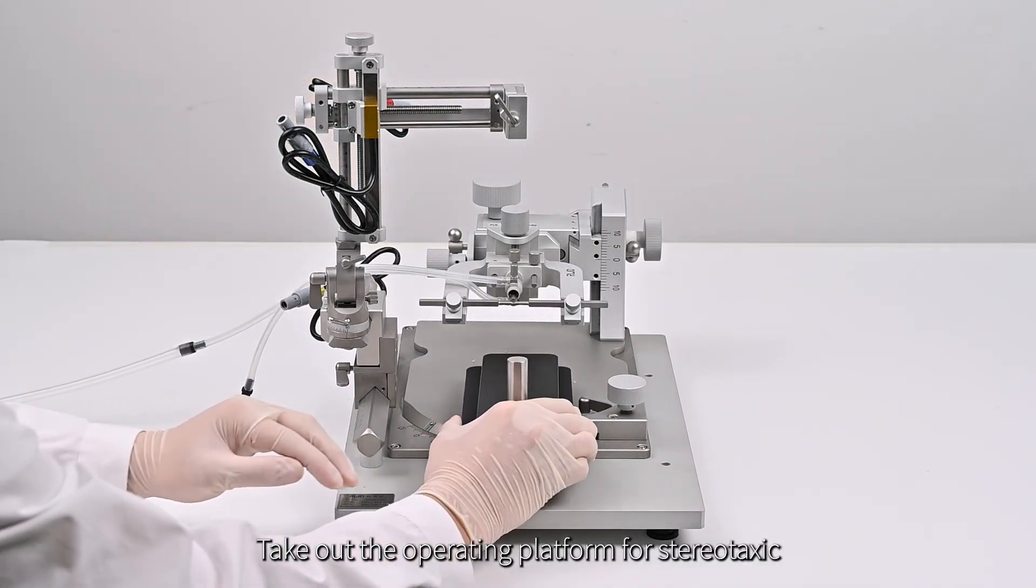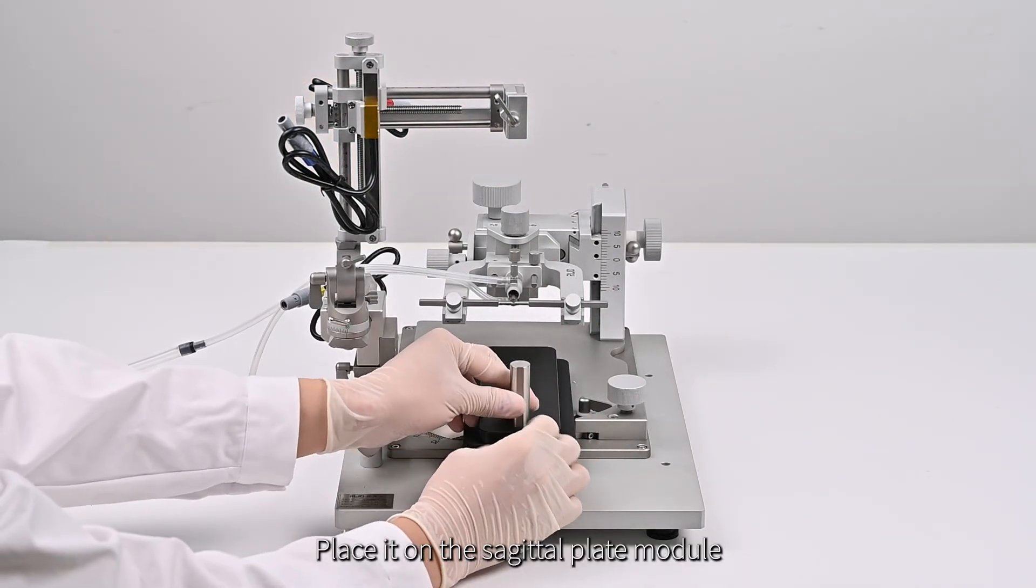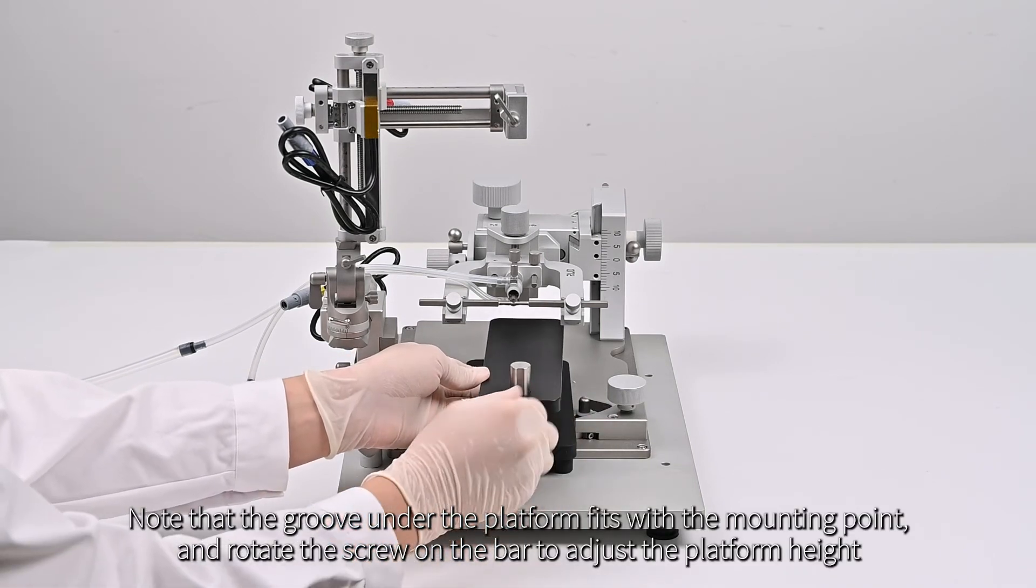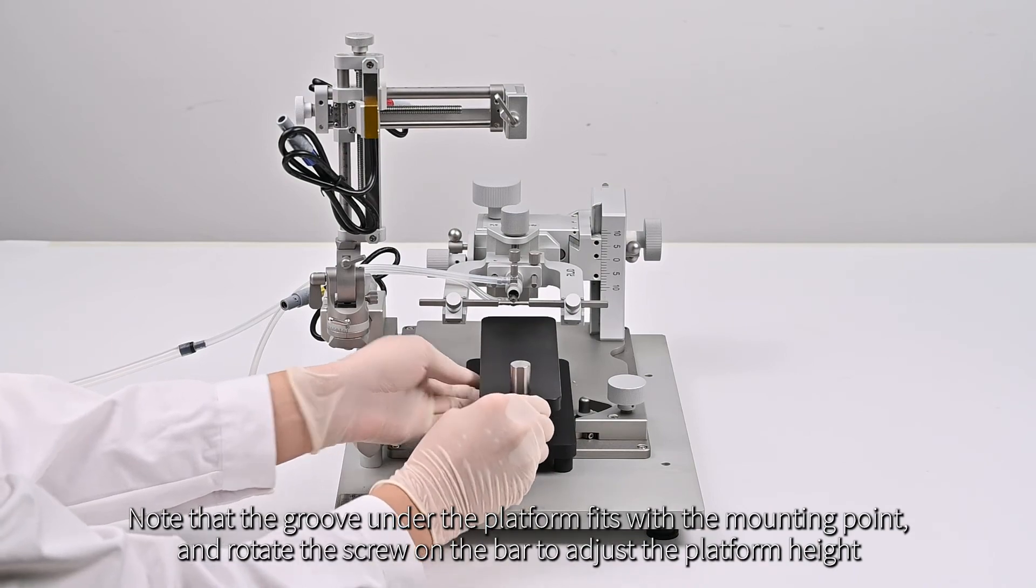Take out the operating platform for stereotactic. Place it on the sagittal plate module. Note that the groove under the platform fits with the mounting point, and rotate the screw on the bar to adjust the platform height.